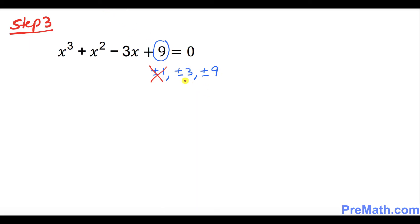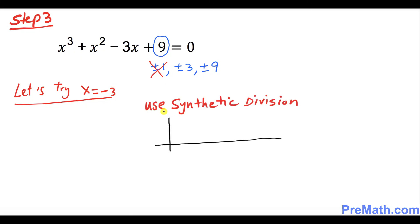Let's try x = -3. We're going to use synthetic division. We put down the coefficients: 1, 1, -3, and 9. The outside number is -3, which is the value we're testing. We bring the 1 down as it is.